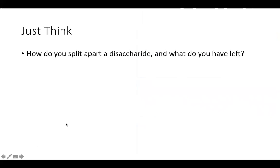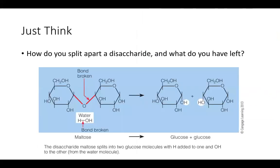To split apart a disaccharide, we add water back to it, producing two monosaccharides. This reaction is called a hydrolysis reaction, performed by adding water — in the form of two hydrogens and an oxygen — across the bond that connected the two monosaccharides, breaking that bond and forming two single sugars.